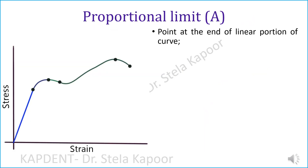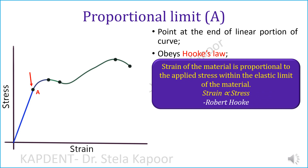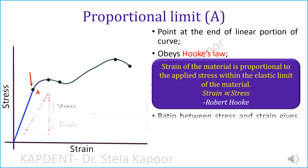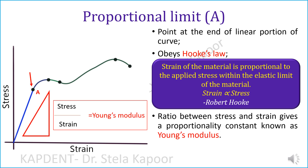Now let's understand the various regions and points on this curve. Beginning with the proportional limit — it lies at the end of the linear portion of the curve. This region obeys Hooke's Law, named after Robert Hooke, who stated that the strain of the material is proportional to the applied stress within the elastic limit of the material, hence the name proportional limit. In this linear region, the ratio between stress and strain, or the slope of the line, gives us the proportionality constant known as Young's modulus.